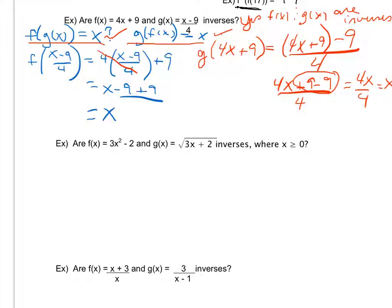Looking at a second example, I'm asked to determine if f of x equal to 3x squared minus 2 and g of x equal to the square root of 3x plus 2 are inverses, where x is greater than or equal to 0. This domain restriction is just a restraint on the domain. In a separate video, I'll talk about where that restraint came from.